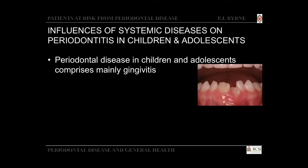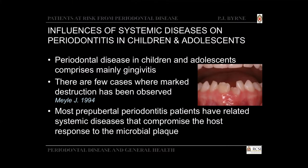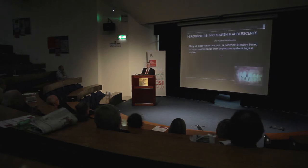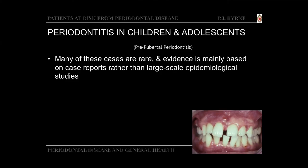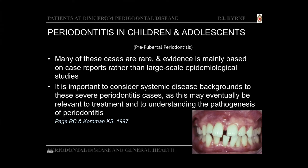Luckily, periodontal disease in children and adolescents comprises mainly gingivitis — just inflammation — with few cases where marked destruction of the periodontal tissues is observed. In prepubertal periodontitis, occurring before puberty, patients may have related systemic diseases that compromise the host response to microbial plaque. These early onset diseases in young patients are rare, and evidence is based mainly on case reports. In these patients, it's important to consider systemic disease backgrounds in our diagnosis.